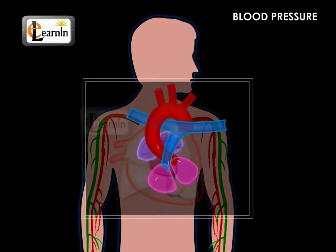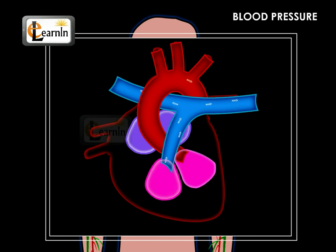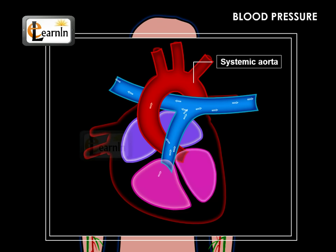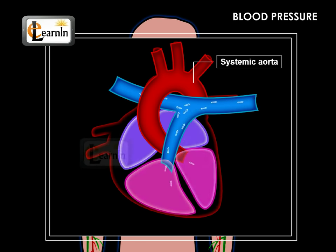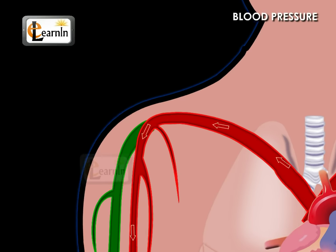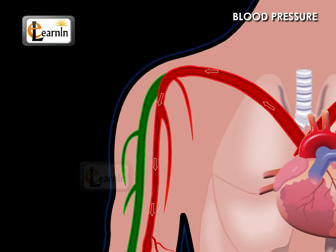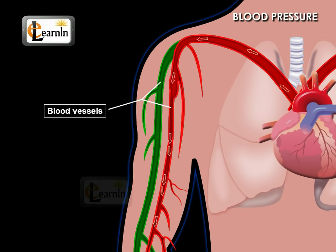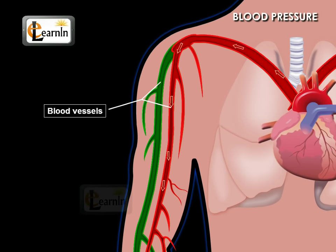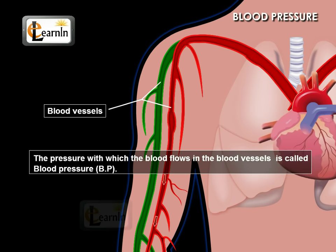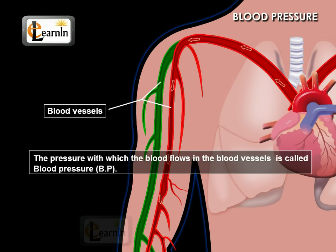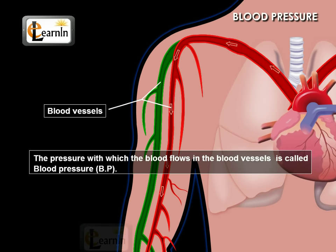Similarly, when the heart pumps blood into the systemic aorta or into the pulmonary trunk, the blood flows with pressure in the blood vessels. The pressure with which the blood flows in the blood vessels is called blood pressure, usually called BP.